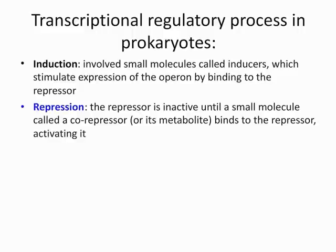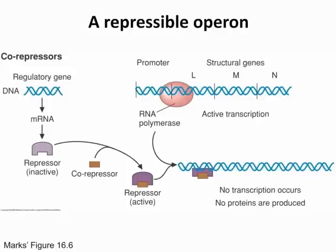Still on learning objective 3, the second process is repression. The repressor is inactive until a small molecule called the co-repressor binds to it, activating it. The co-repressor binds to the inactive repressor, making it an active repressor. Once the repressor is active, it binds to the DNA operon area and transcription is inhibited.